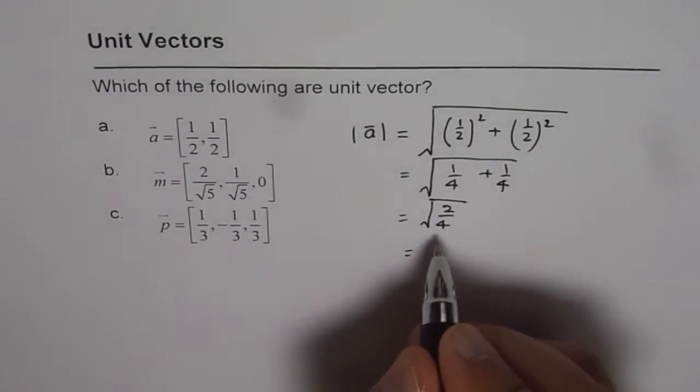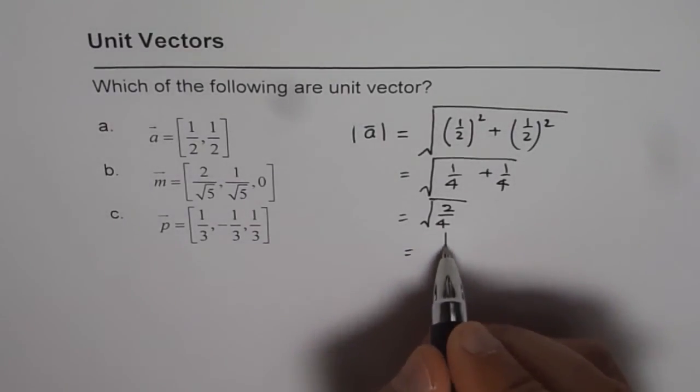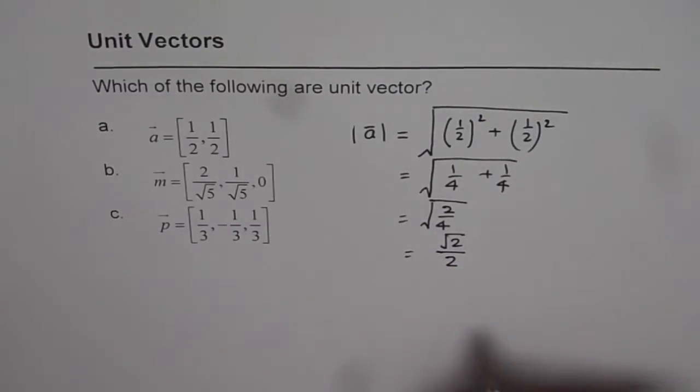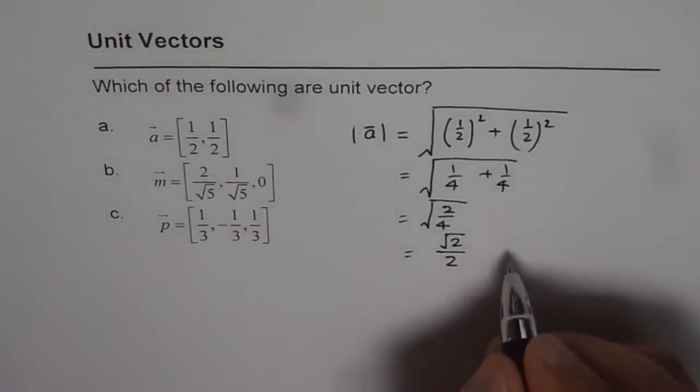Or is equals to square root 2 over 2. Now that is not 1, right? So therefore, it is not a unit vector.